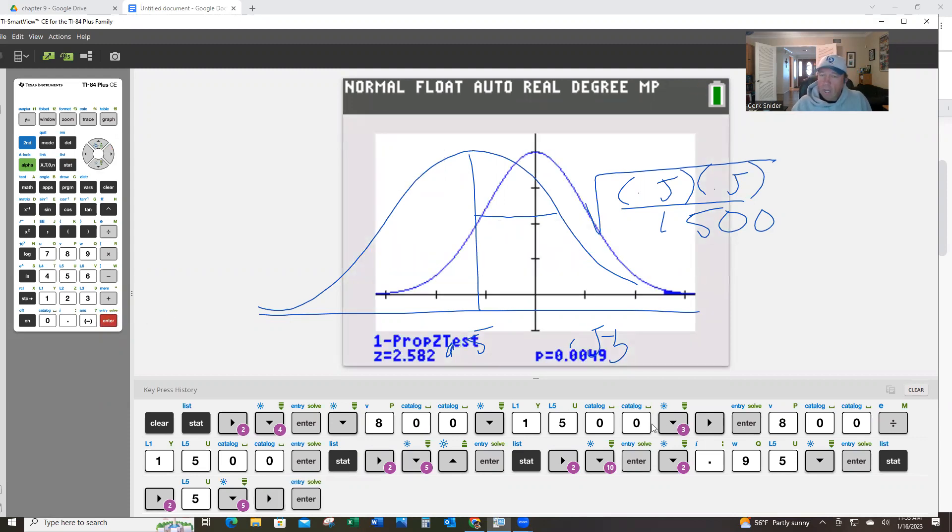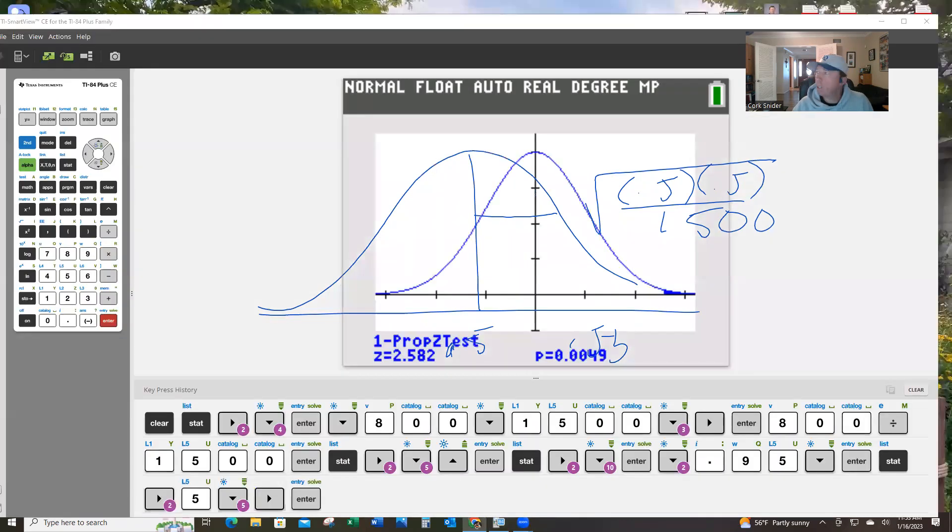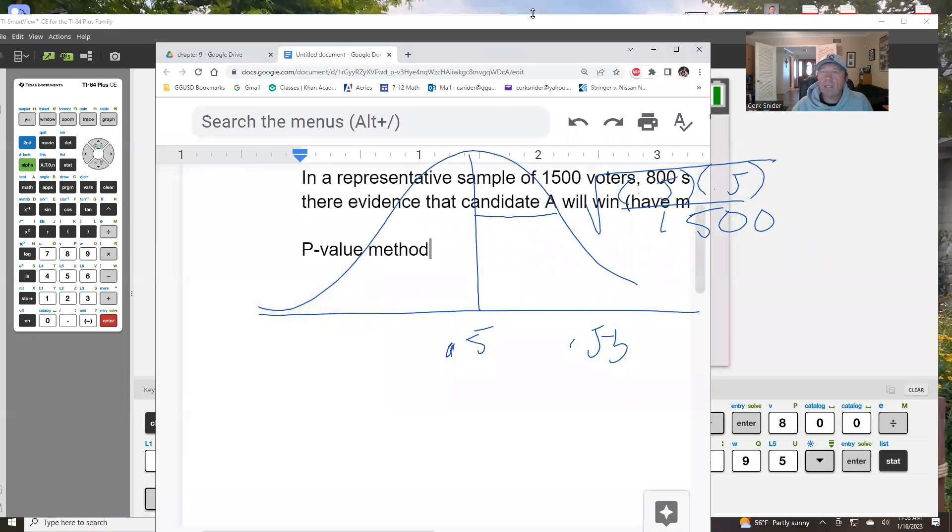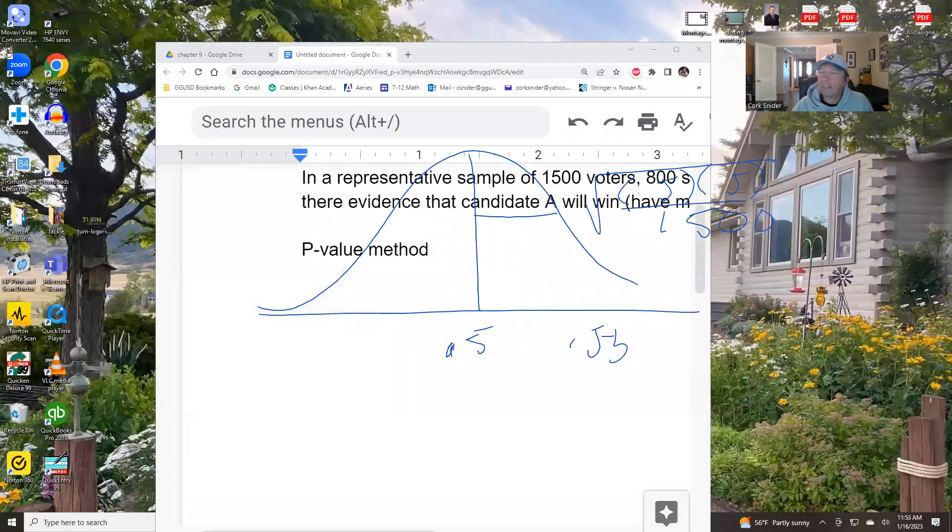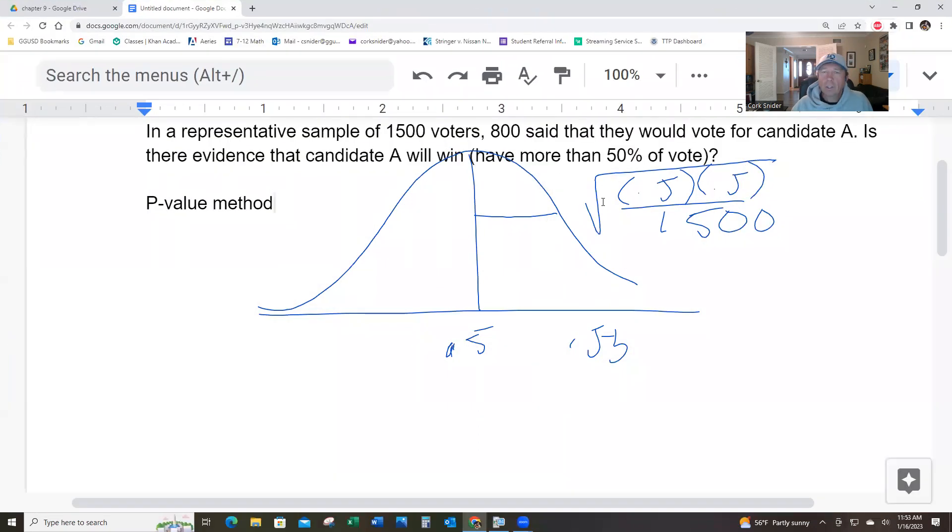And you're going to get about 0.0049. So, 0.0049 is going to be your answer to that. In this particular case, the Z score was 2.58. And the P-value was 0.0049. So, there is very little chance that this happened by chance. There's a pretty good chance that this candidate is going to win.